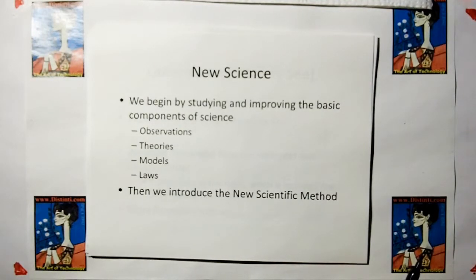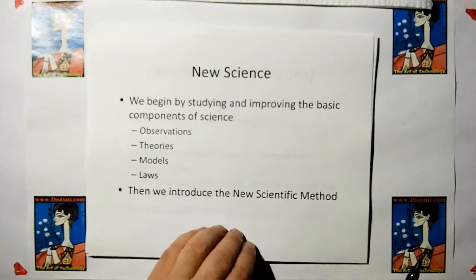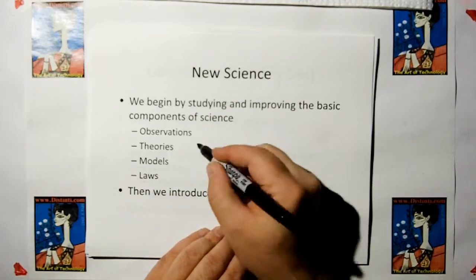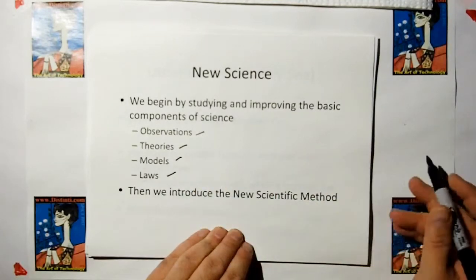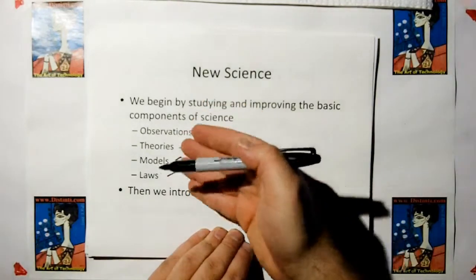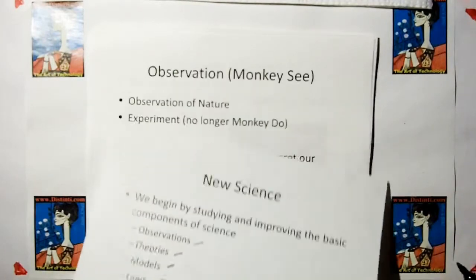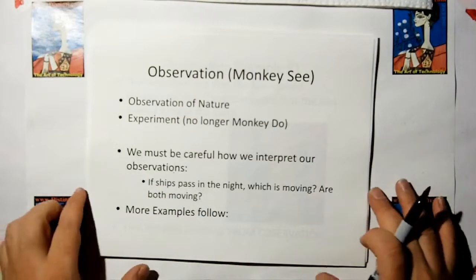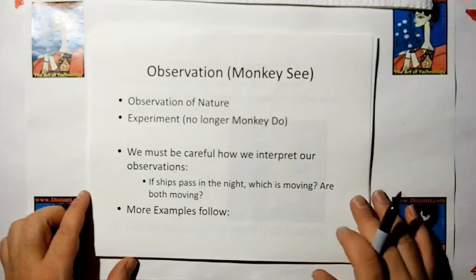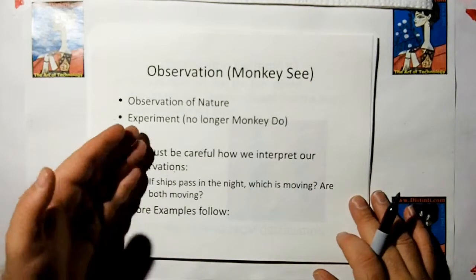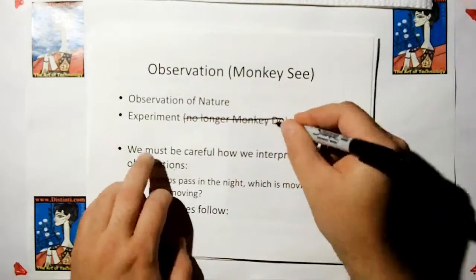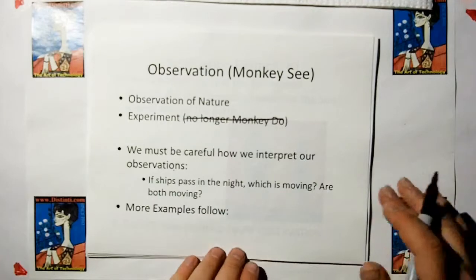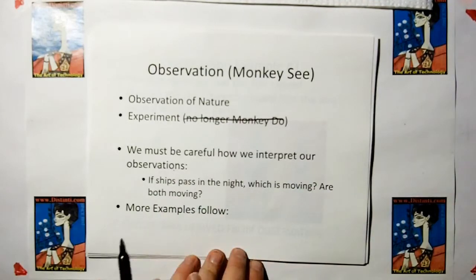We have to radically change our scientific method. We can no longer rely on Stone Age methods that are inefficient and more conducive to religion than as a method to find the truth. By the way, this is a long video so I'm going to go really fast. We have to begin by studying and improving the basic components of science: observations, theories, models, and laws.